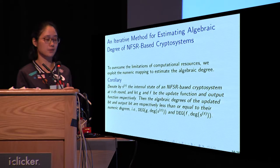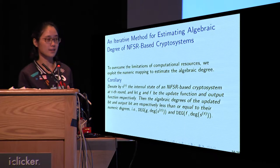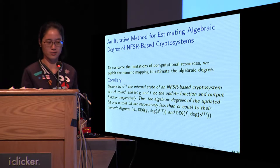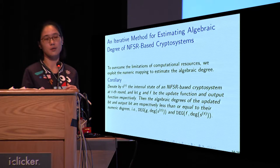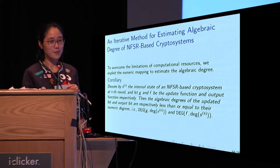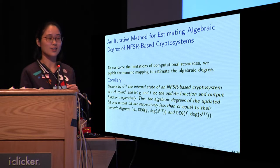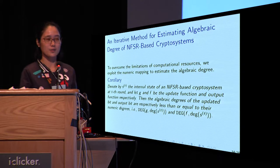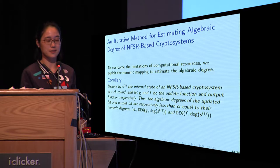An NFSR-based cryptosystem usually consists of an update function g and an output function f. The internal state is updated by the update function and the output bit is generated by the output function f after an initialization of a sufficient number of rounds. The algebraic degree of a composite function does not exceed its numeric degree, and we can easily show that these properties apply to NFSR-based cryptosystems.